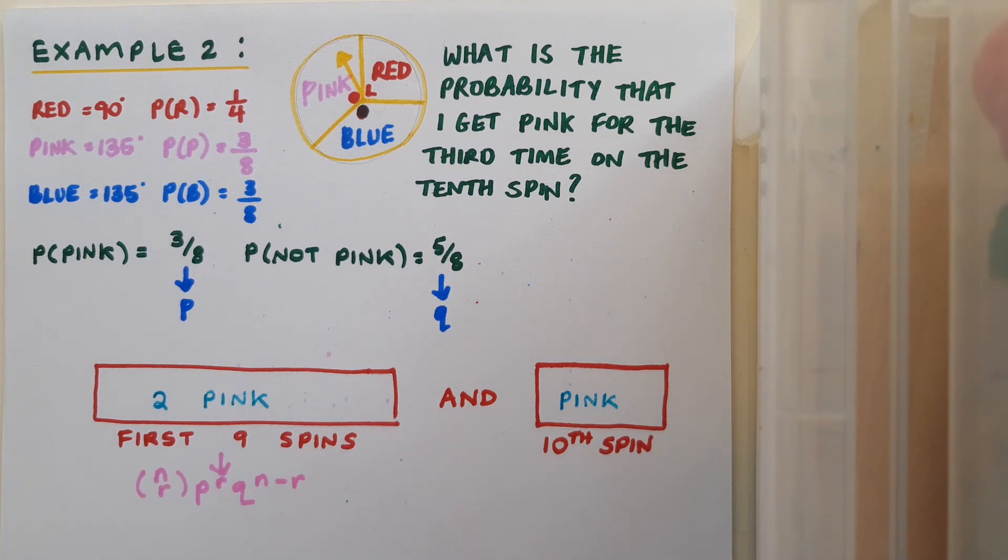So I'm using my formula over here for the first nine spins, and then I'm going to multiply that by the probability of getting pink on the tenth spin. And that's just one individual spin, so that'll just be the probability that we previously worked out for spinning pink on the spinner.